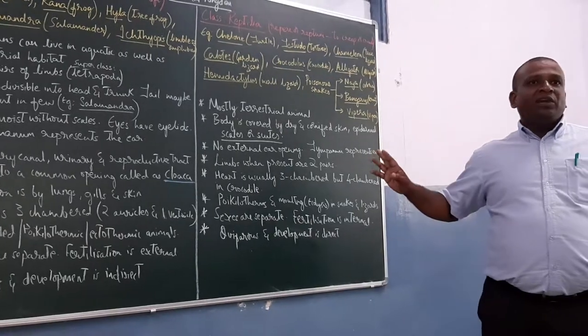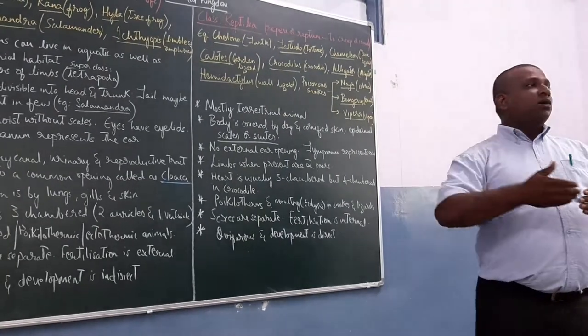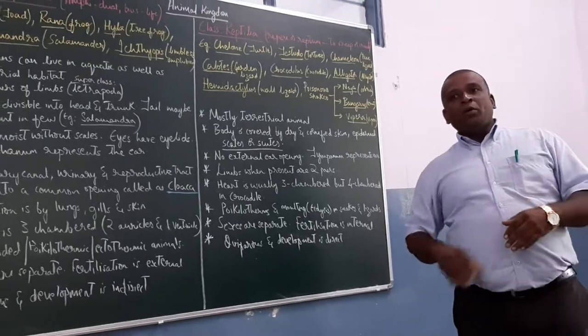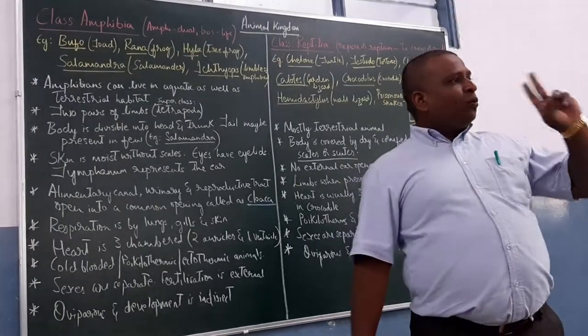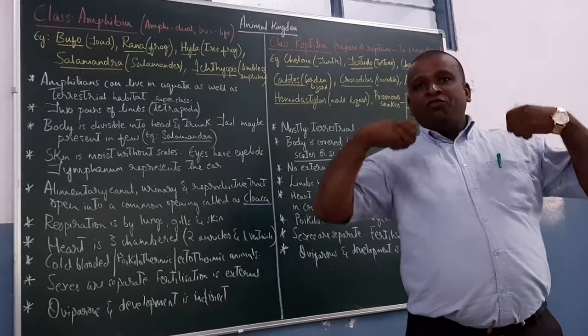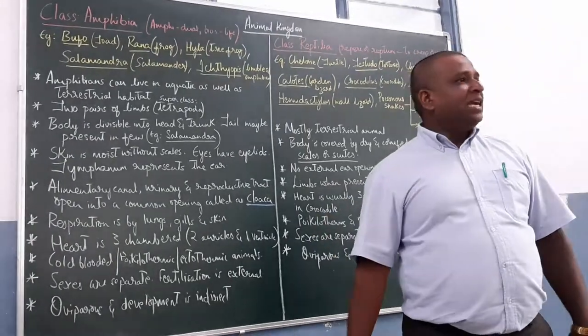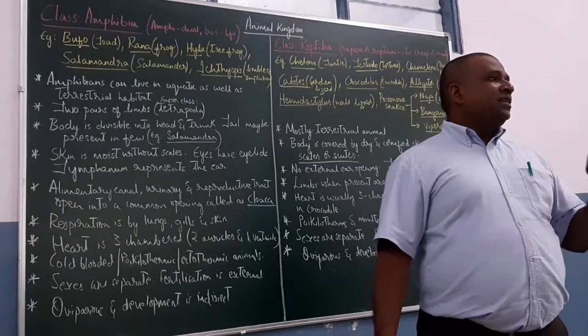Today's class we are going to discuss about the classes which belong to superclass tetrapoda. Tetrapoda means they are having two pairs of limbs, a pair of forelimbs, a pair of hind limbs. So we call them as tetrapoda.